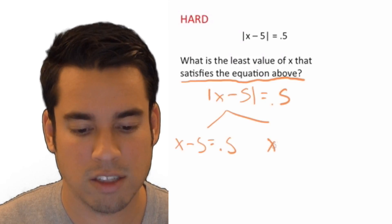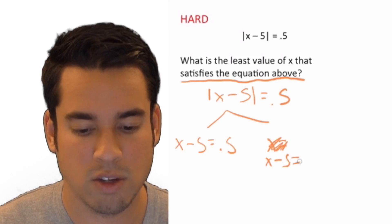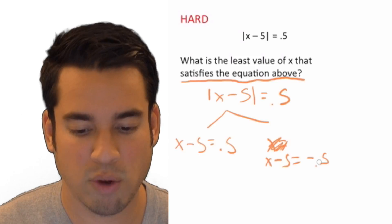And over here we have x minus, oops, excuse me. Let me rewrite that. x minus 5 equals negative 0.5.